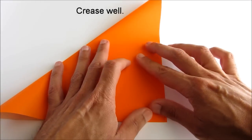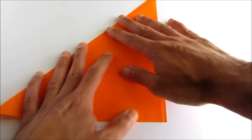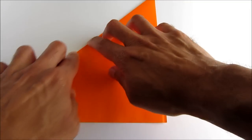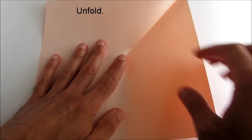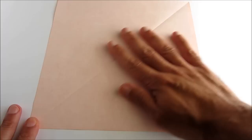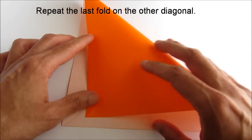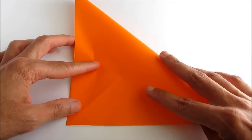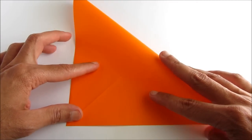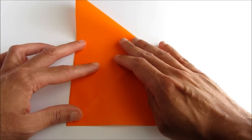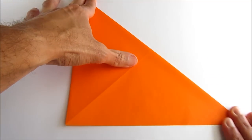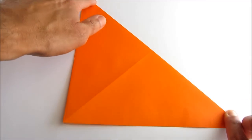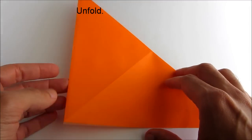Crease that fold well, then unfold, and repeat that fold along the other diagonal. Again, crease well as with all origami folds. Unfold that.